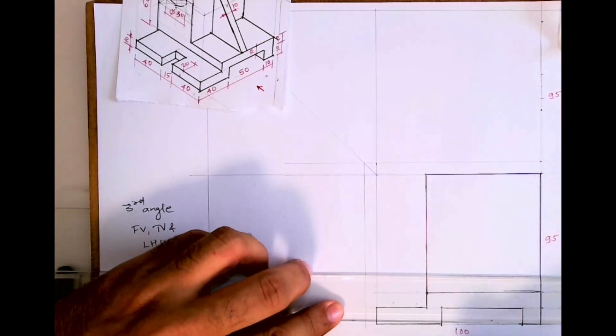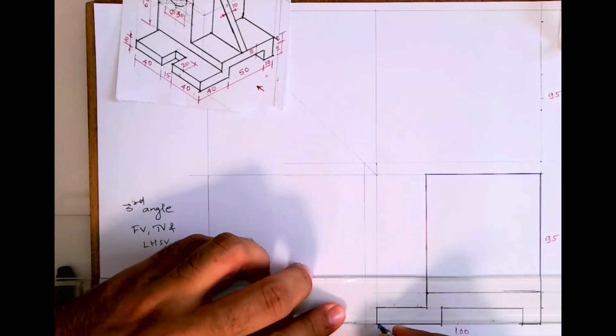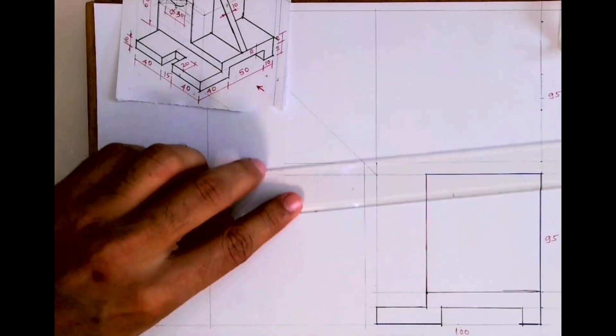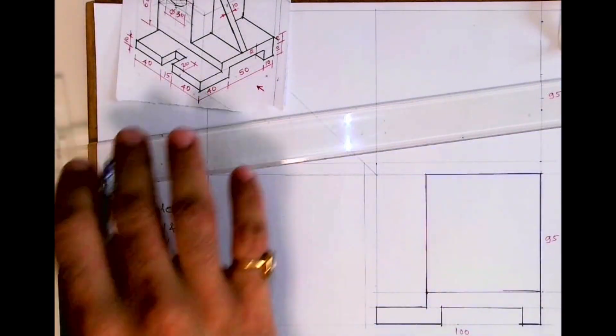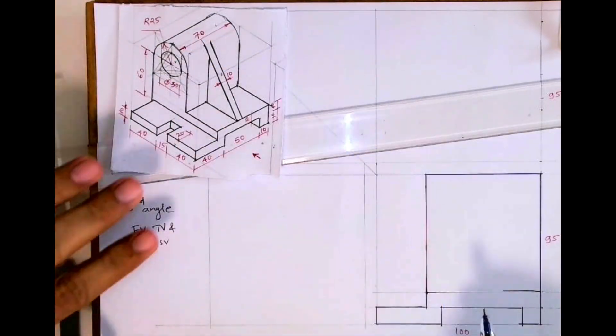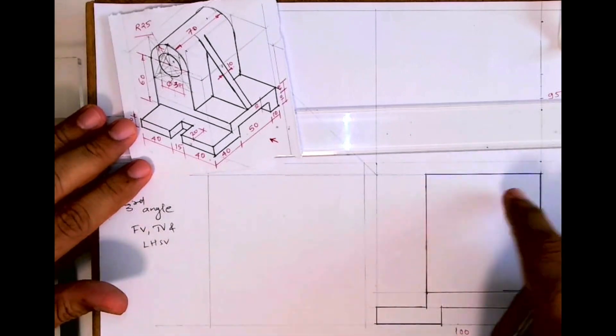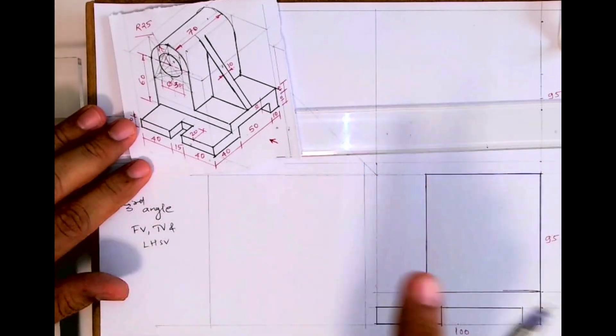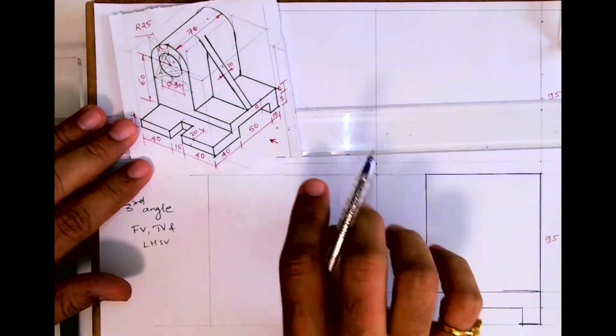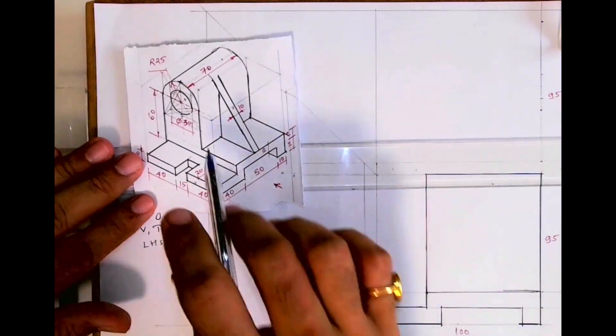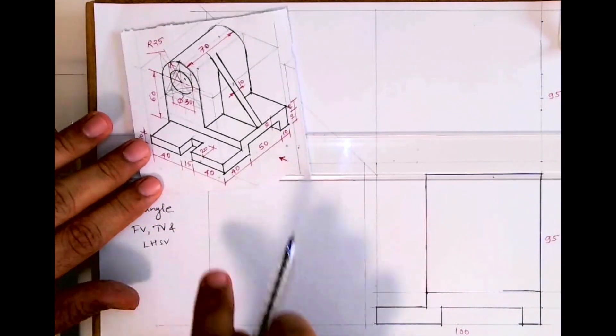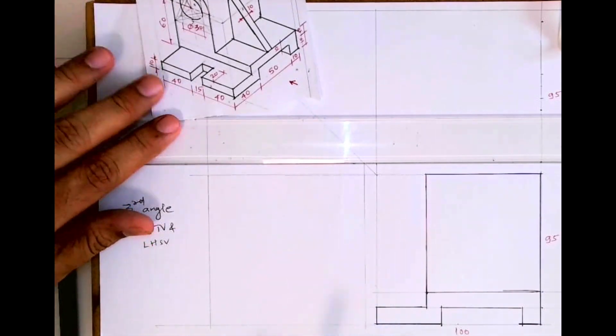Almost front view is done, apart from that middle line and dotted line. See, in front view this part is there but we don't know till what height. That you can get only from side view, and this dotted part you can get from top view. So now what I'll do, I will draw side view.